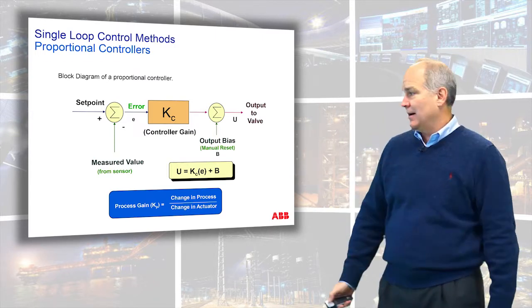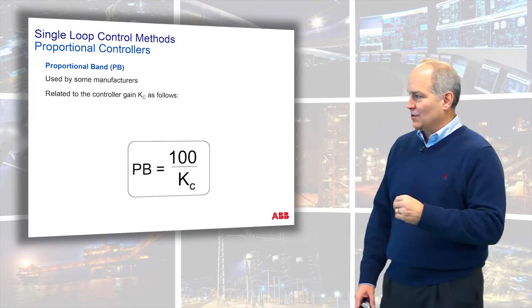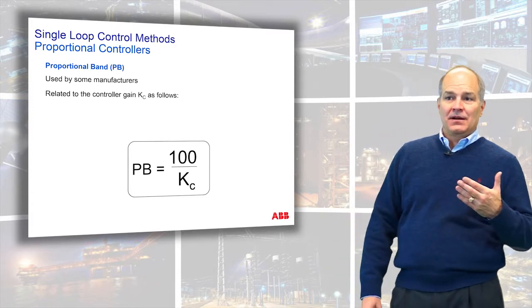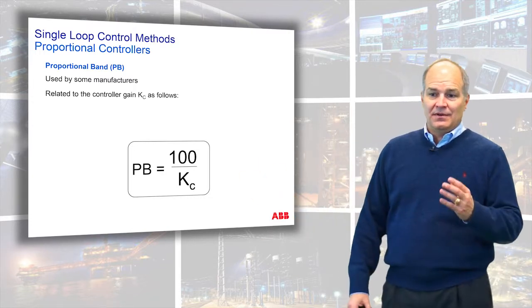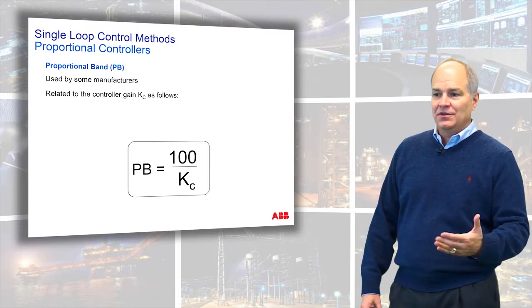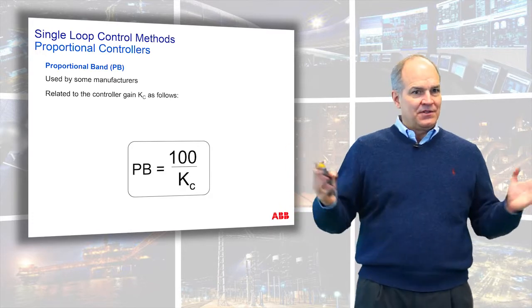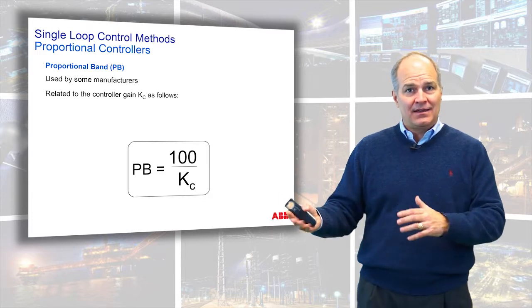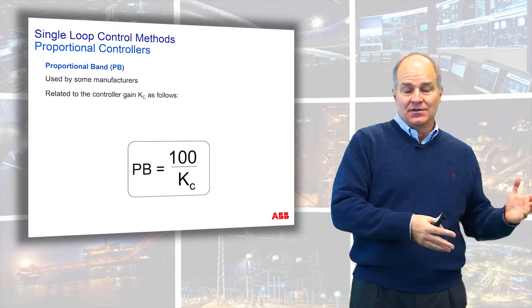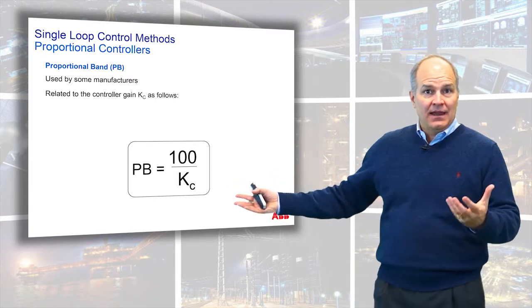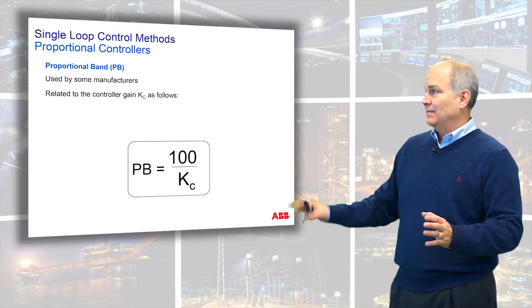Some vendors use the term proportional band. Proportional band and control gain are inverses of each other — for example, a control gain of 0.3 equals a proportional band of 330. I recall talking to an I&E staff member: I said I need a control gain of 0.5 and he said he never used anything other than 200. We were saying exactly the same thing, but he was working in proportional band and I was thinking in control gain.